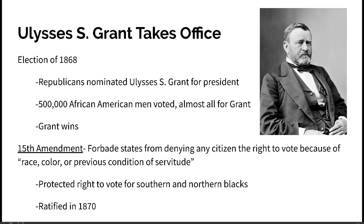Republicans nominated Ulysses S. Grant for president in 1868. About 500,000 African American men voted, almost all of them for Grant. Grant won and took over the presidency. During his presidency, the 15th Amendment was passed, which forbade states from denying any citizen the right to vote because of race, color, or previous condition of servitude. This was meant to protect the right to vote for not just Southern Blacks, but Northern Blacks as well.